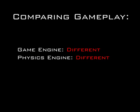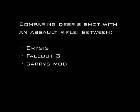Now we will switch to comparing games that use different physics engines. We will compare Crysis, which uses CryEngine, Fallout 3, which uses NVIDIA PhysX, and Garry's Mod, which uses Havok. We will shoot random objects with an assault rifle in each game.